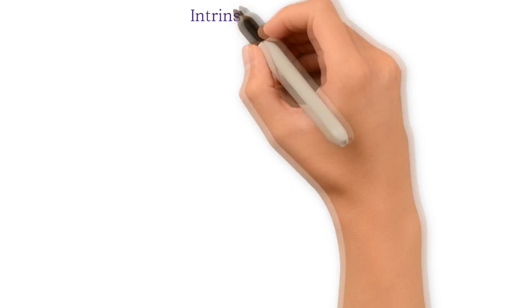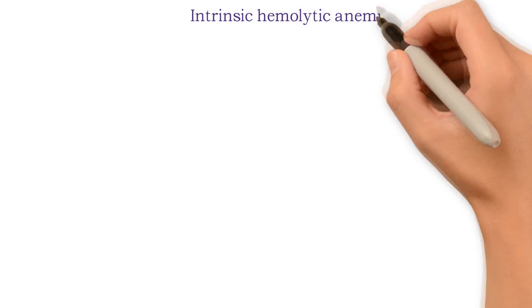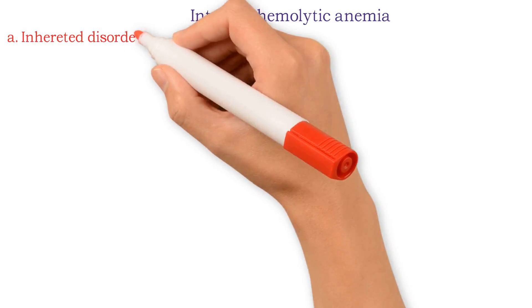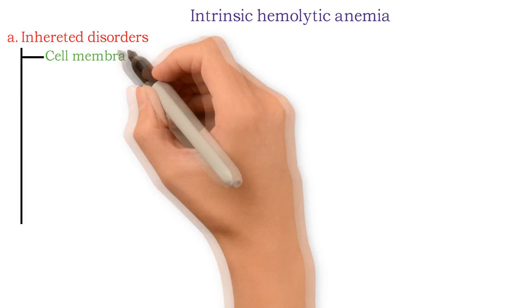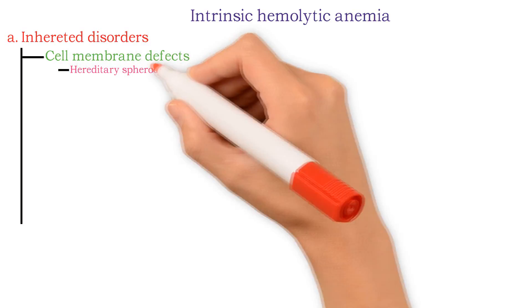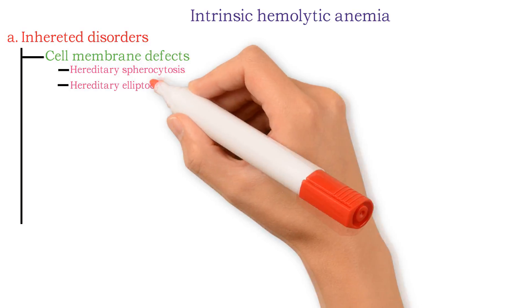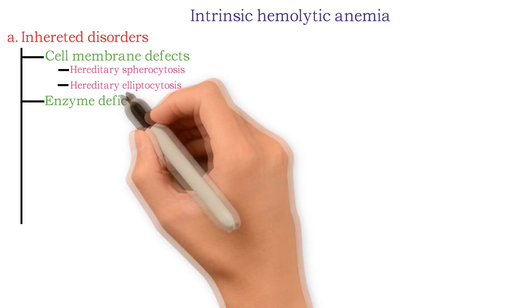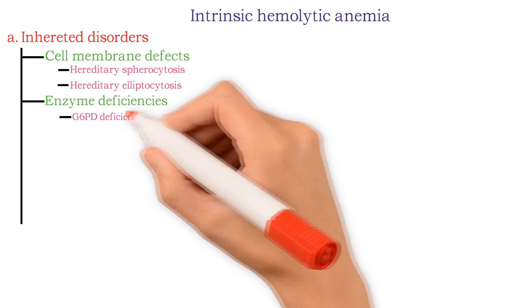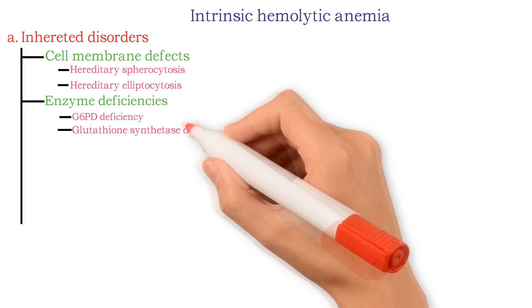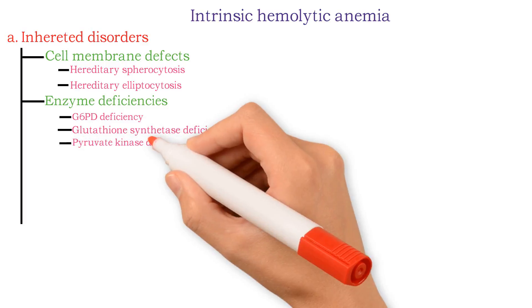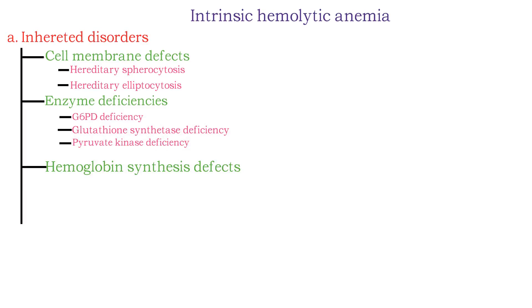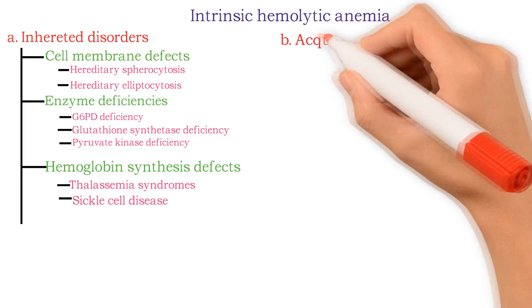Inherited disorders: cell membrane defects like hereditary spherocytosis and hereditary elliptocytosis; enzyme deficiencies like G6PD deficiency, glutathione synthetase deficiency, and pyruvate kinase deficiency; hemoglobin synthesis defects like thalassemia syndromes and sickle cell disease.